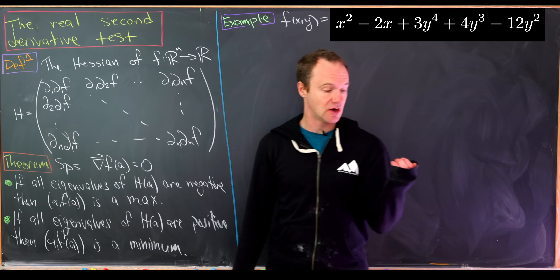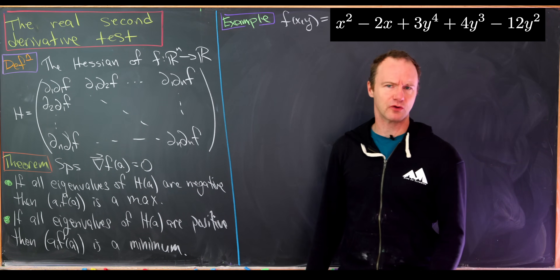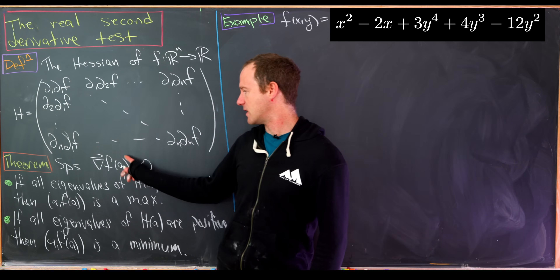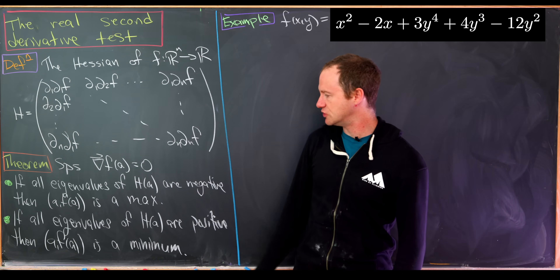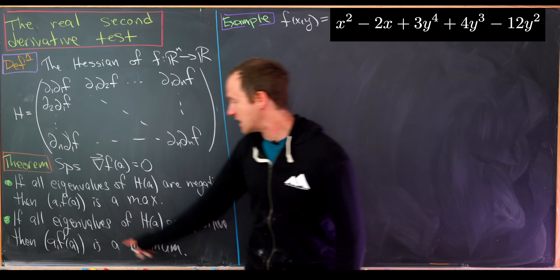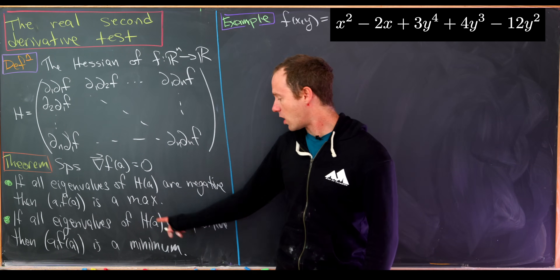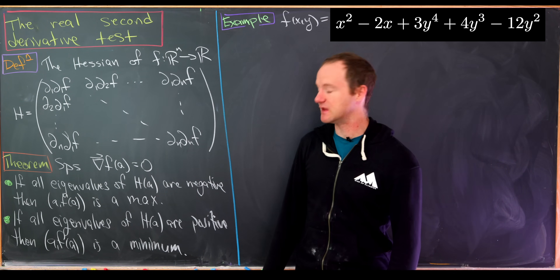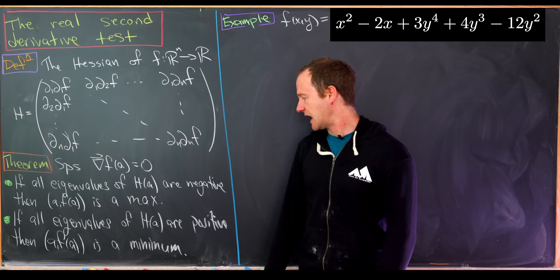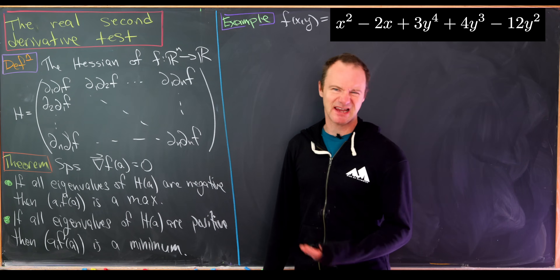Now that we have the Hessian, we're ready to state the following theorem — perhaps a proof will appear in a future video. Suppose we have a critical point a, where the gradient equals zero. If all eigenvalues of the Hessian H evaluated at a are negative, then (a, f(a)) is a local maximum. If all eigenvalues are positive, then it's a local minimum. If some are negative and some positive, we have a saddle point. If some are zero, the test is inconclusive.